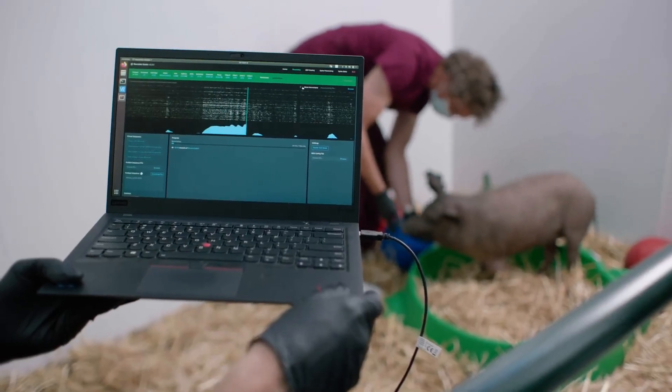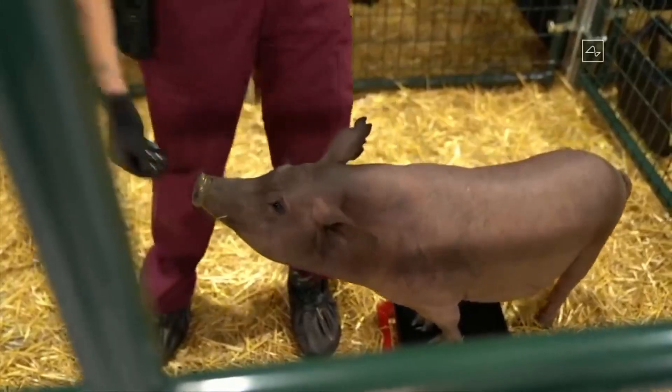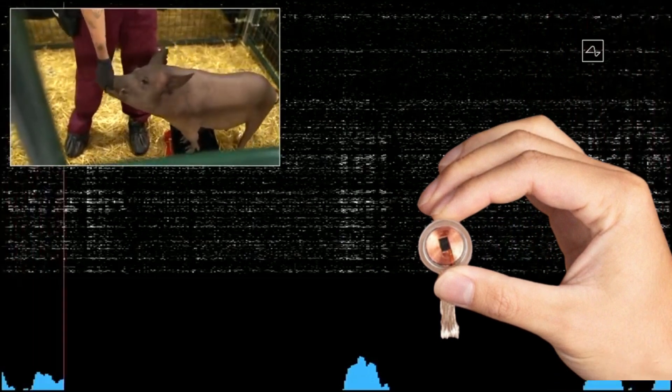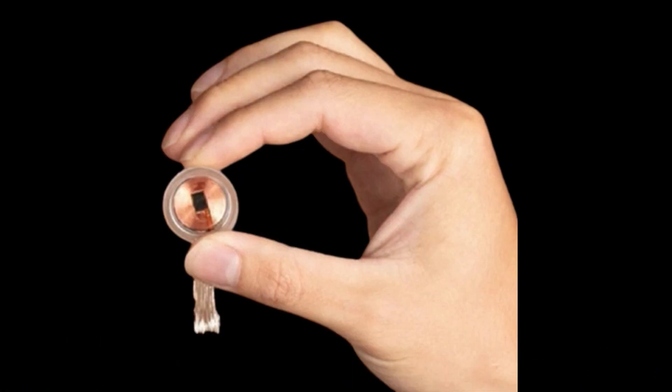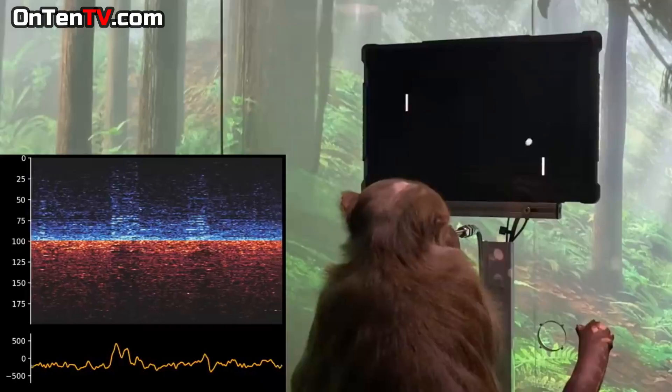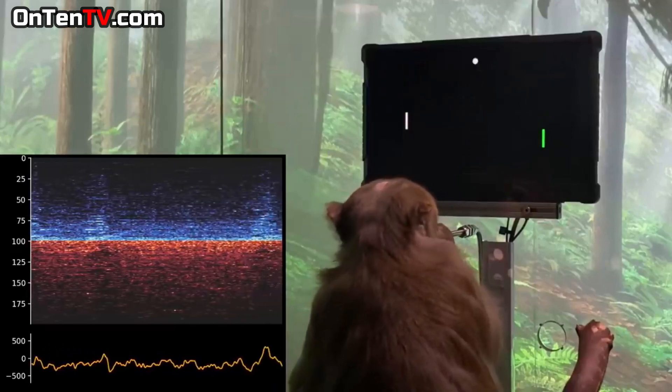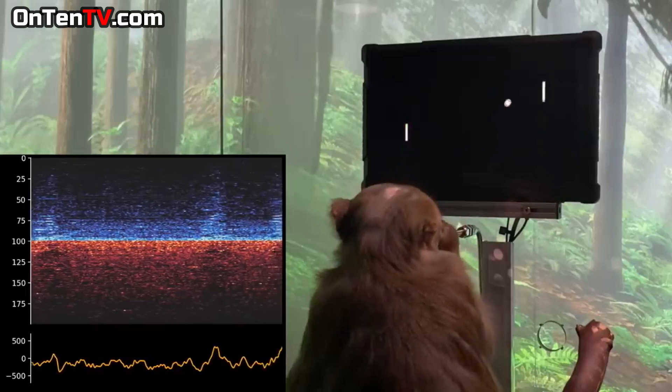This signal that a brain sends is electricity, and that is why the chip has to be electric. In the year 2020, Neuralink placed the chip inside a monkey's brain. The chip that was placed in the monkey's brain allowed it to control a cursor on the computer screen.